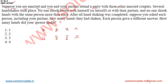Several handshakes took place. No one shook hands with themselves or with their partner — so X cannot handshake with himself or with his partner. Also, no one shook hands with the same person more than once. For example, if X shakes hands with Y, X cannot shake hands with Y a second time — there is only one handshake between any two people.